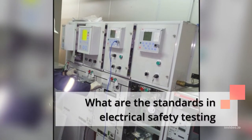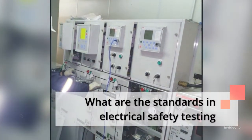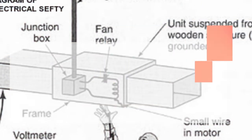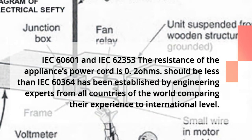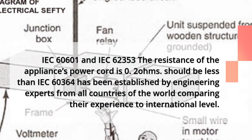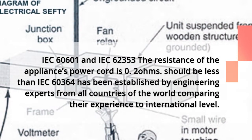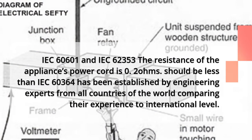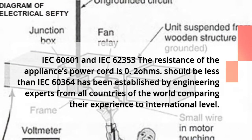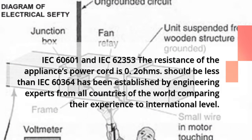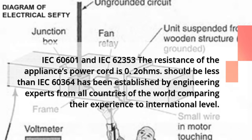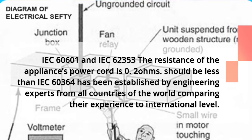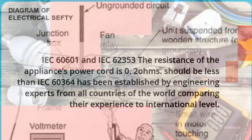What are the standards in electrical safety testing? IEC 60601 and IEC 62353 specify that the resistance of the appliance's power cord should be less than 0.2 ohms. IEC 60364 has been established by engineering experts from all countries of the world, comparing their experience at the international level.